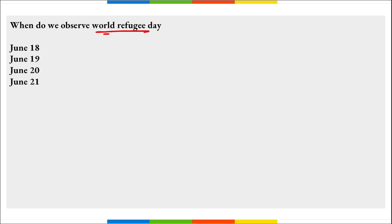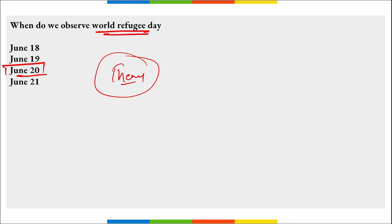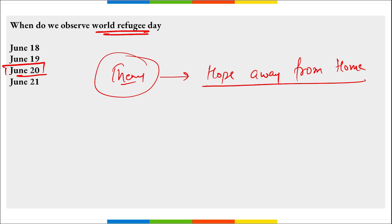World Refugee Day is observed on 20th of June to honor the strength and courage of all refugees around the globe and to encourage public awareness and support for those who have fled their homeland because of conflict or natural disaster. The theme for World Refugee Day is 'Hope Away from Home.'